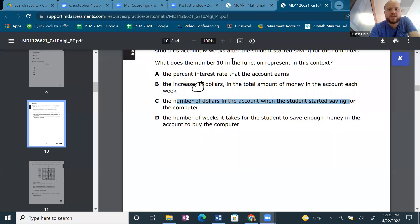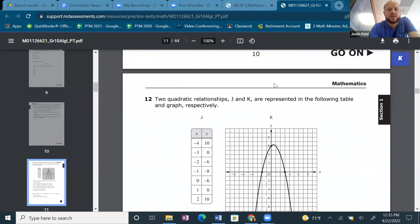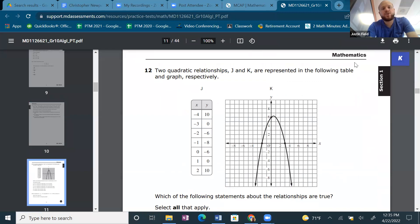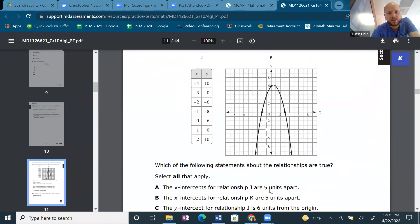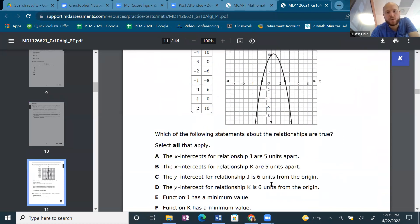Alright. 12. Two quadratic relationships, J and K, are represented in the following table and graph respectively. Which of the following statements about the relationships are true? Ew. Okay. The x-intercepts, y-intercepts, minimum value. Okay.